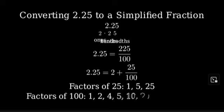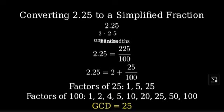The factors of 100 are 1, 2, 4, 5, 10, 20, 25, 50, and 100. Looking at both lists, we can see that 25 is the greatest number that appears in both lists. Therefore, 25 is our GCD.